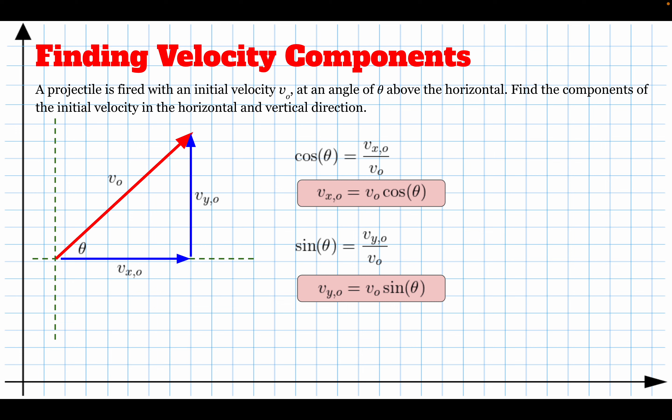For horizontally launched projectiles it was easy — the velocity in the y direction was always zero and the velocity in the x direction was just whatever the launch velocity was. But now it's more complicated, and that's how we're going to find components.